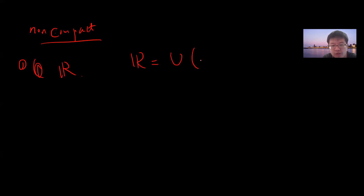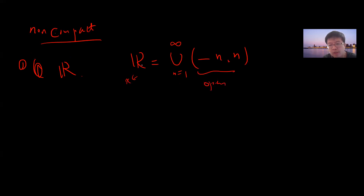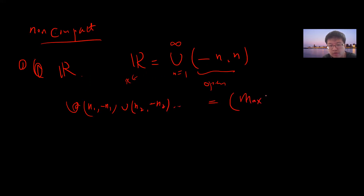First example: take the real line R. Obviously the real line can be covered by all the open intervals (-N, N) for N from one to infinity. It's easy to check that for every x in R, you can always cover it by a large enough N. But this is an open cover of R with no finite subcover, because if you only take finitely many, say (-N1, N1) and (-N2, N2), the union is just (-max(N1,N2), max(N1,N2)), which is a finite number and cannot cover all of R. So R is not compact.